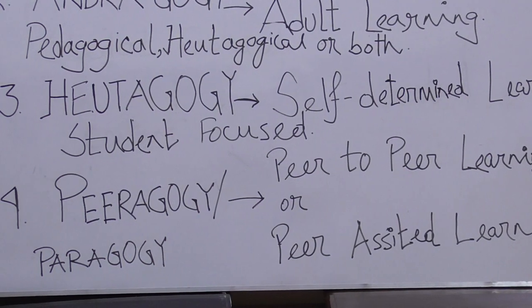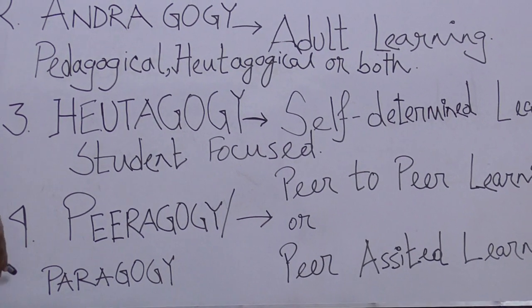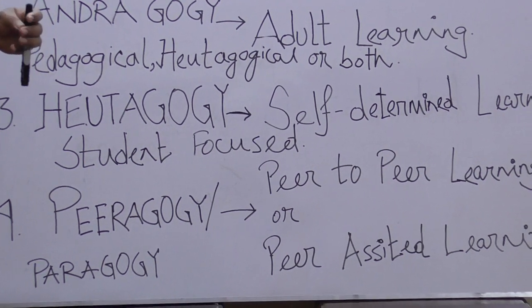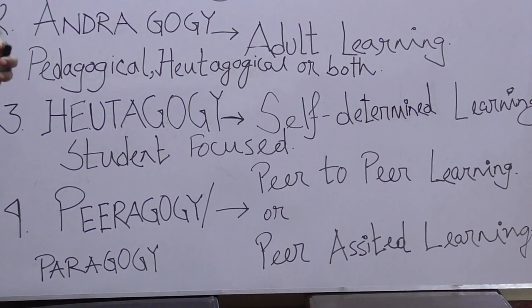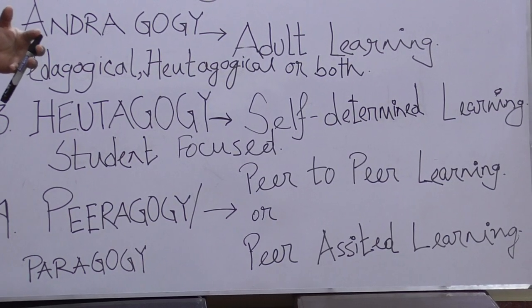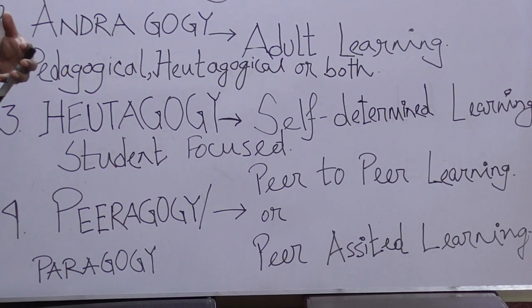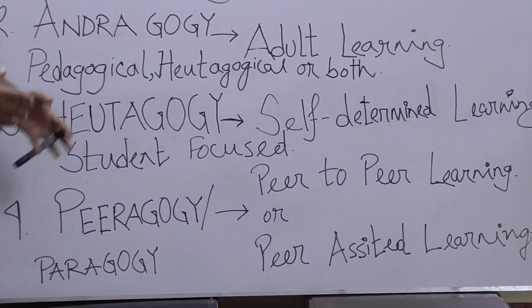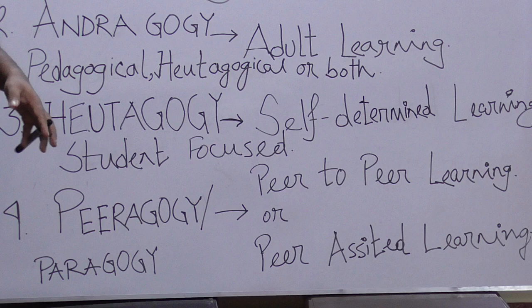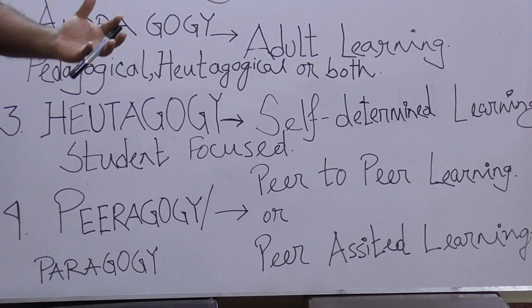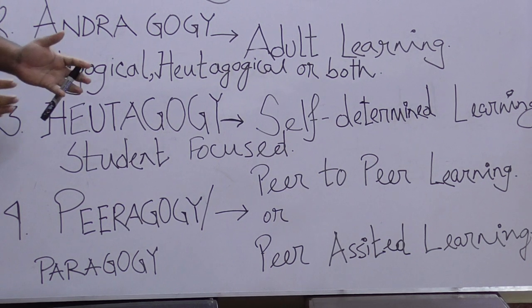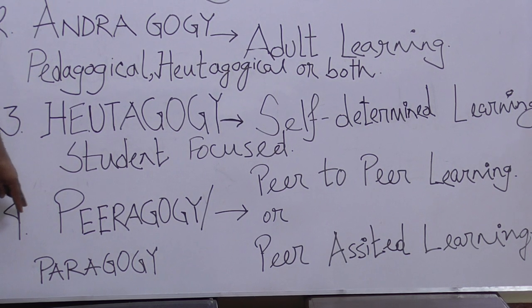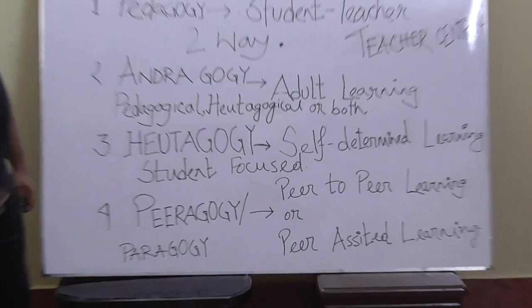The fourth approach is peeragogy, otherwise termed paragogy or peer-assisted learning. This means students teach each other — for example, someone good at mathematics teaches his peers, and another student might teach history or science. After receiving a lecture from the teacher, peers share their learning with one another. This is called peeragogy or paragogy.